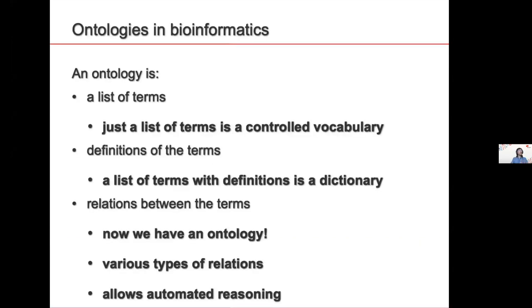That was the first part of BG curation: choosing the data we're going to use. But then we have to annotate this data to make it useful, and for this we annotate it to ontologies. An ontology in bioinformatics is a list of terms — you agree which words you will use for what. For example, for brain you choose one term: brain or central nervous system. If you only have a list of terms, you have a controlled vocabulary, which is already quite useful.